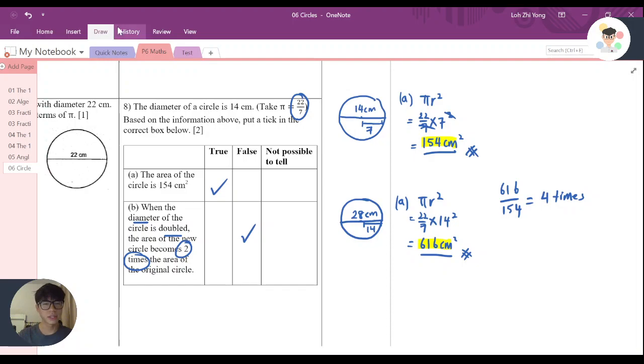So the answer here is actually 4. Now, just a very, very important thing that you must know: as long as a radius or diameter is being doubled, if this is being doubled.